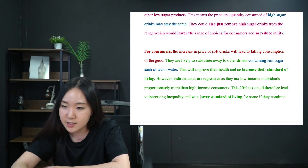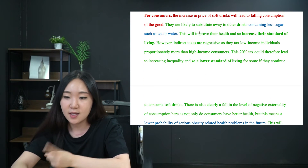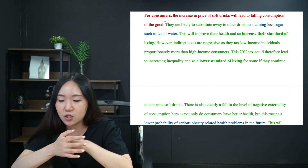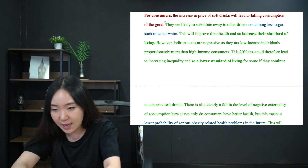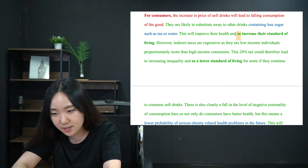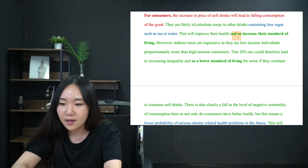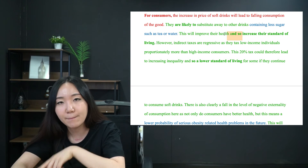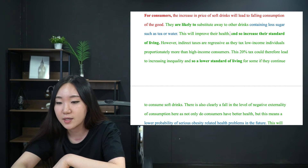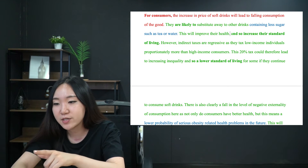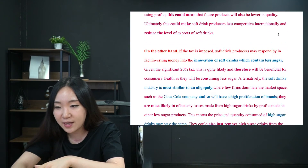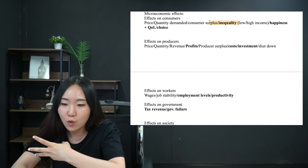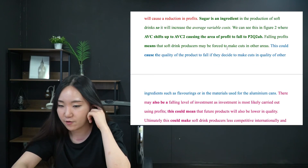For consumers: the increase in prices of soft drinks will lead to falling consumption of the goods. They are likely to substitute away to other drinks containing less sugar, such as tea or water. This will improve their health, and so increase their standard of living. The reason this is important: improving health is not a microeconomic consequence on its own — standard of living is the microeconomic consequence. Whatever your paragraph is, link it back to one of those stakeholder effects.